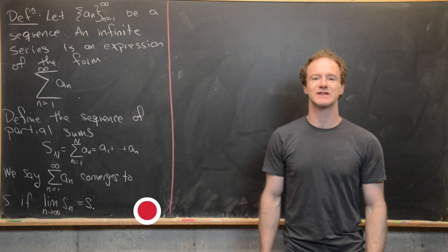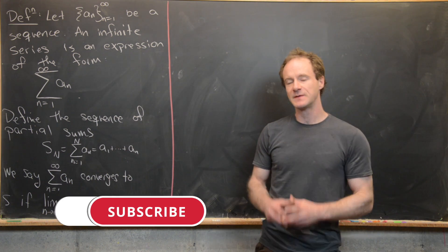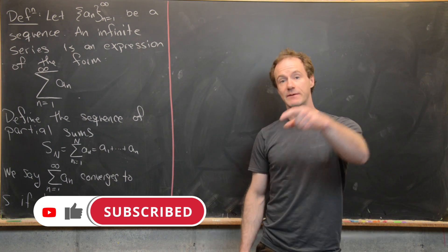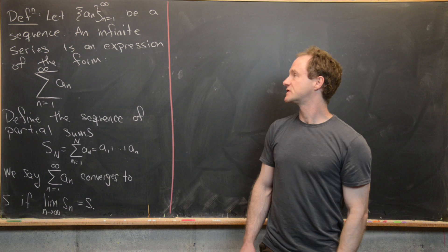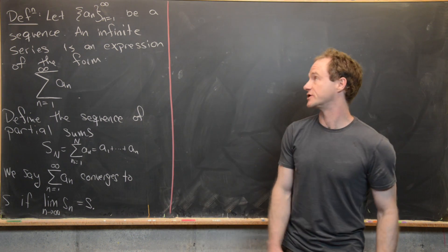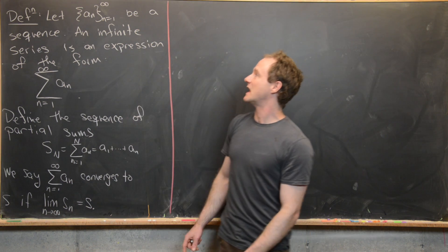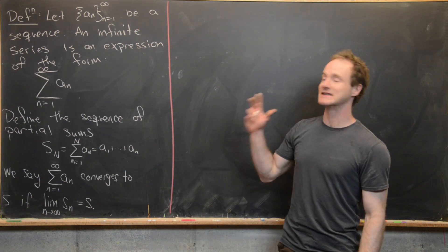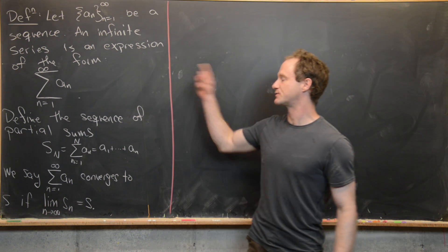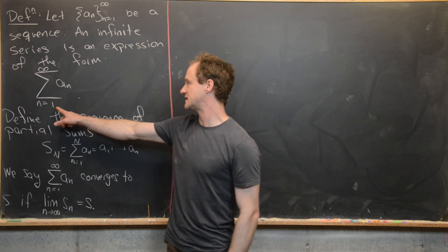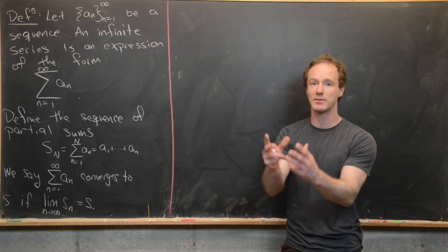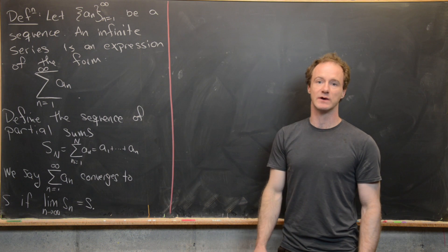We just did a couple of videos where we looked at sequences of real numbers and the careful epsilon-n definition of the limit of a sequence. Here we want to start looking at infinite series. So let's look at a quick definition. Let's say that a_n for n equal 1 to infinity is a sequence of numbers. Then an infinite series is an expression of the form — the sum as n goes from 1 to infinity of a sub n — in other words, we're adding up all of the elements of this sequence.